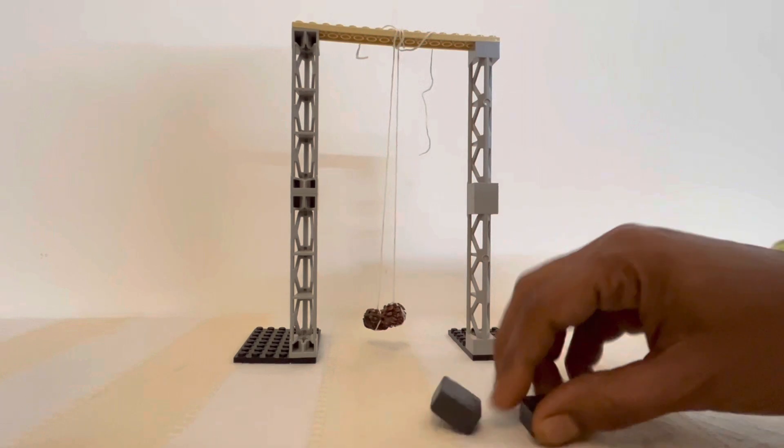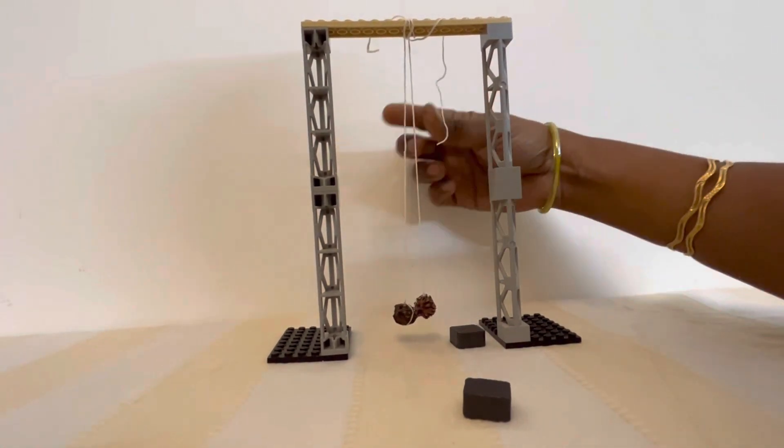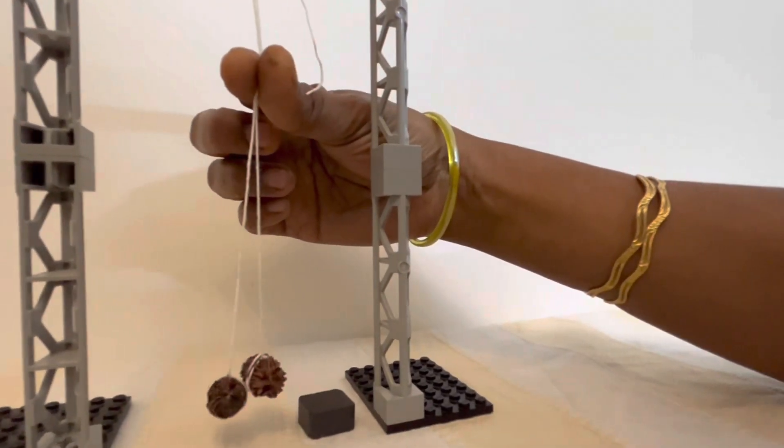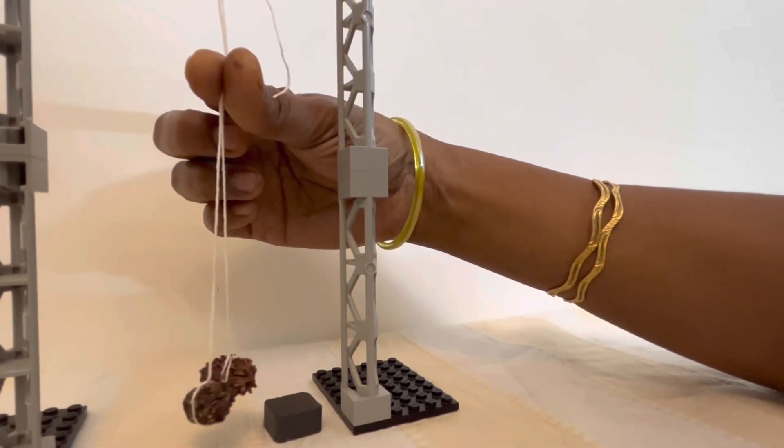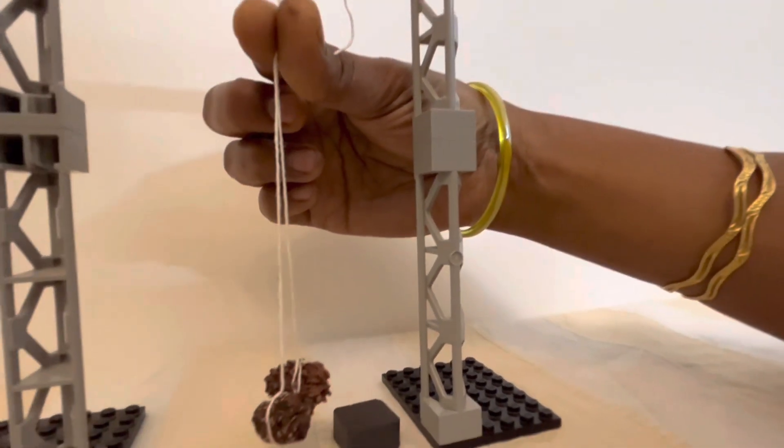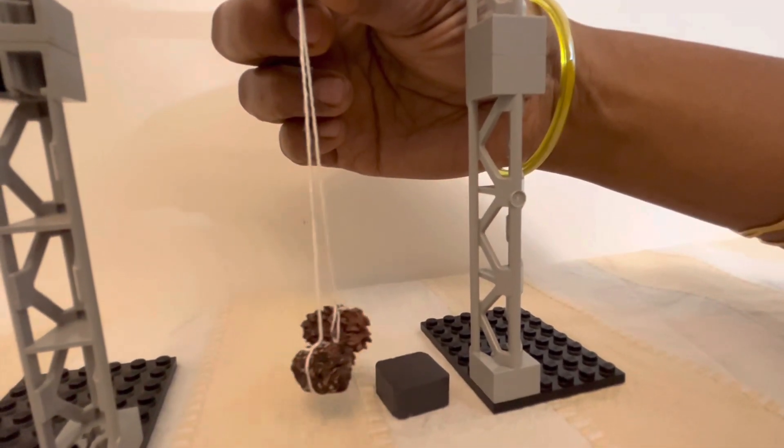Now I am placing a magnet to the right side of the Rudraksha and I am holding the thread. They are again starting to rotate clockwise.